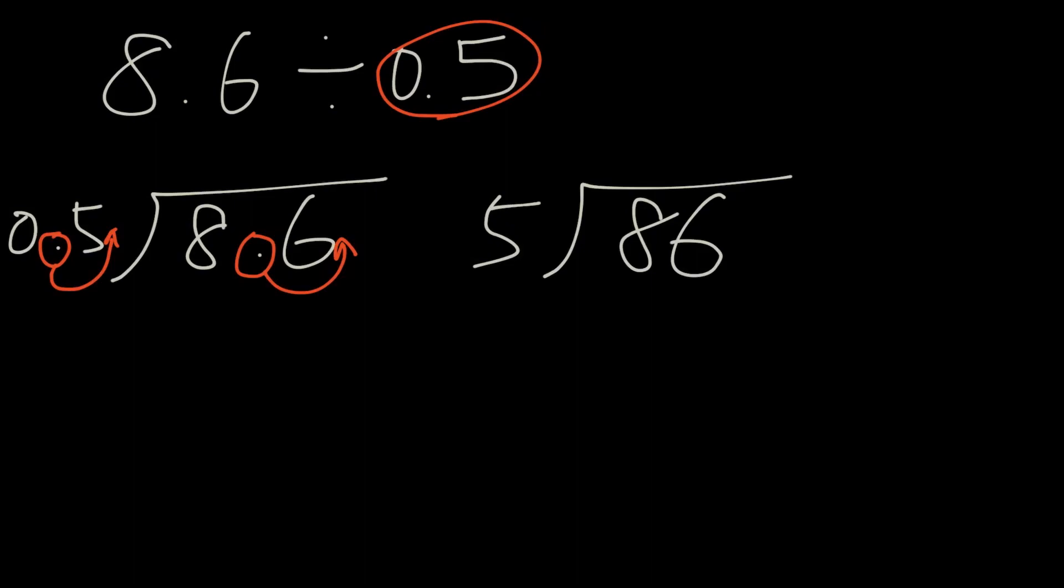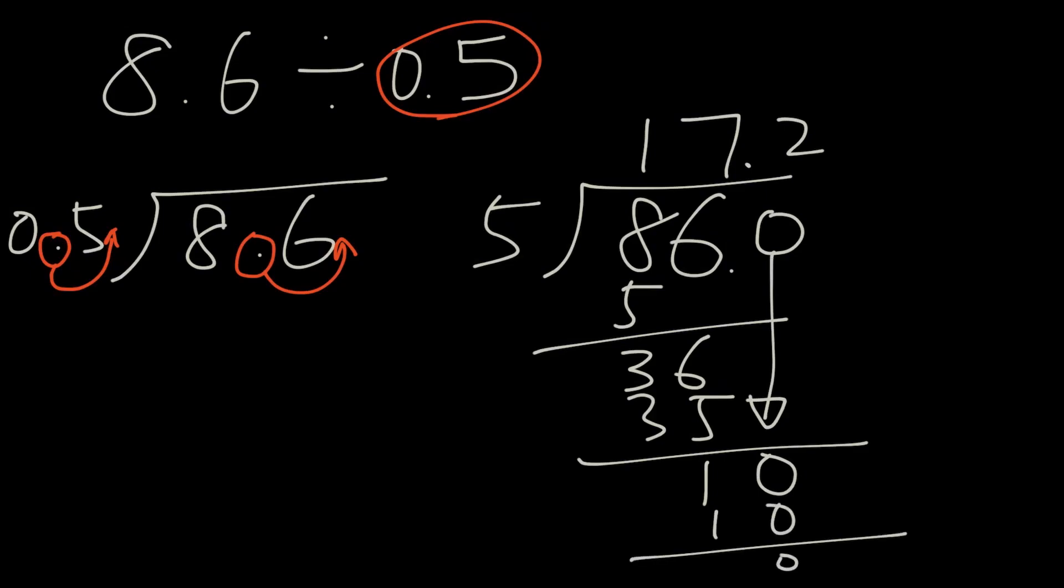Now we can solve this question by dividing. It'll be 1, 36. 5 times 7 equals 35. Bring the one down, and the 86 you can add a 0 and bring it down here. 5 times 2 is 10, so our answer to this question is 17.2.